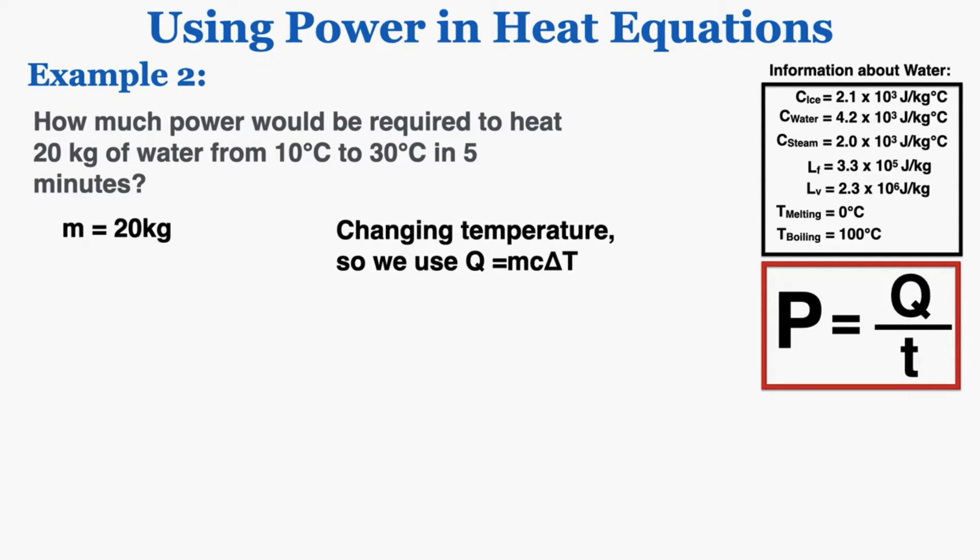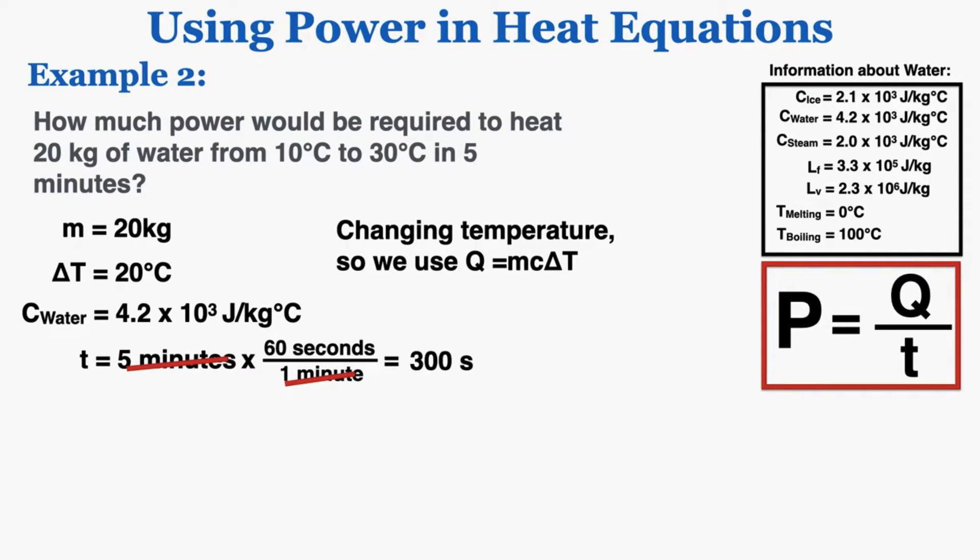I know that the mass is 20 kilograms, the change in temperature is positive 20 degrees Celsius, the specific heat of water is 4.2 times 10 to the third joules per kilogram degree Celsius, and the time is 5 minutes, which I can show is equal to 300 seconds.